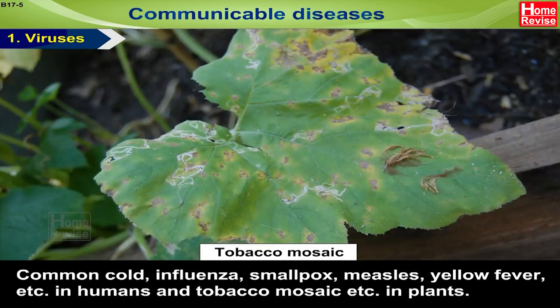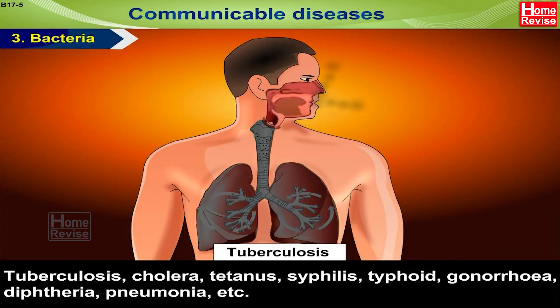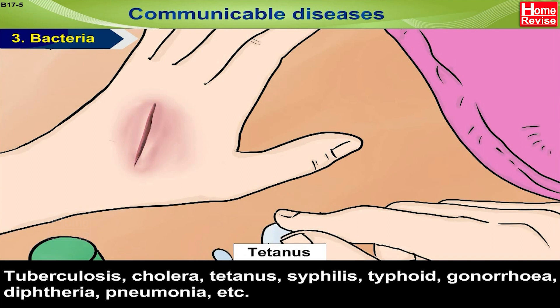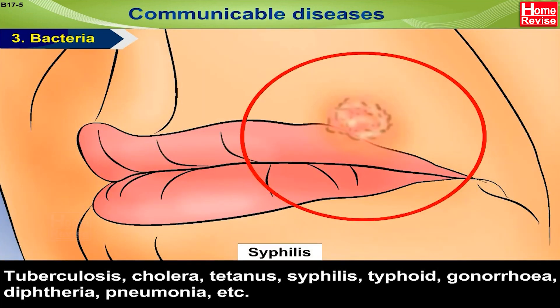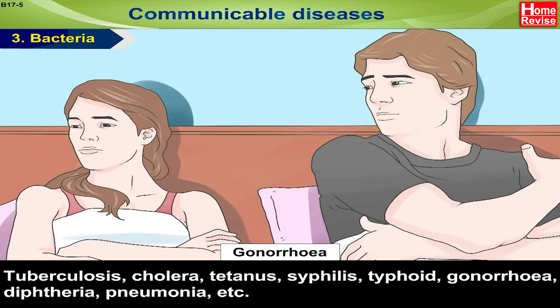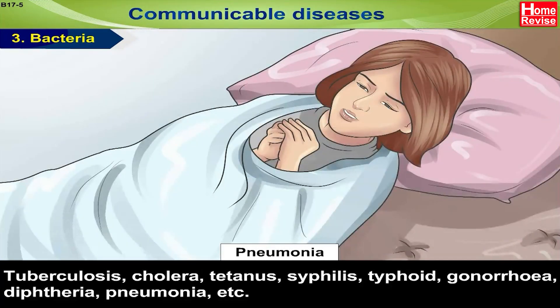Number two — Rickettsia causes: tick fever and typhus fever. Number three — bacteria cause: tuberculosis, cholera, tetanus, syphilis, typhoid, pneumonia, diphtheria, pneumonia, etc.